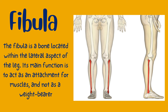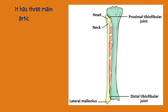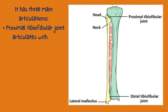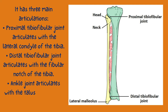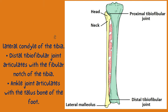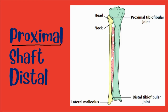Now we're going to study the fibula, a bone located within the lateral aspect of the leg. Its main function is to act as an attachment for muscles; it is not a weight bearer. It has three main articulations: the proximal tibiofibular joint, which articulates with the lateral condyle of the tibia; the distal tibiofibular joint, which articulates with the fibular notch of the tibia; and the ankle joint, which articulates with the talus bone of the foot.